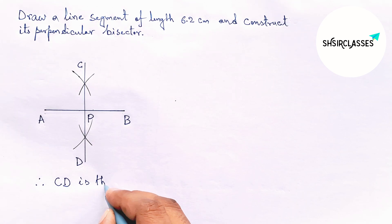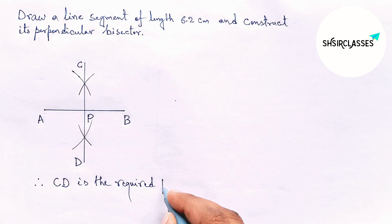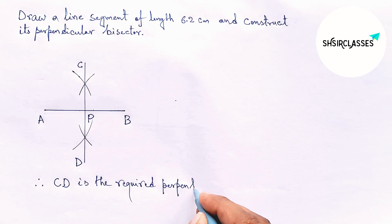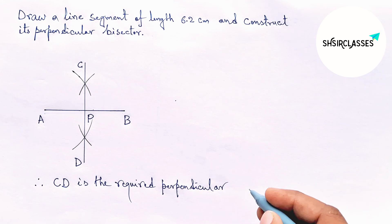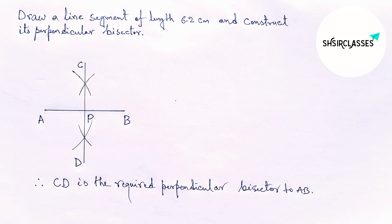CD is the required perpendicular bisector to the line AB of length 6.2 centimeters, and by this way you can construct a perpendicular bisector to a given line. So that's all, thanks for watching. If this video is helpful to you, then please share it.